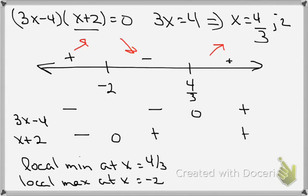Of course if I wanted to find the local min and max I just plug those in. And so that would mean that f of 4 thirds, whatever that value is, that is a local minimum.